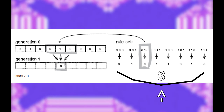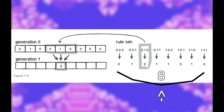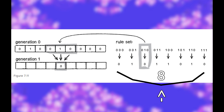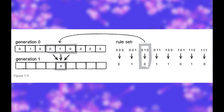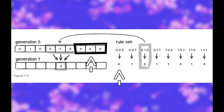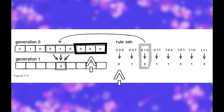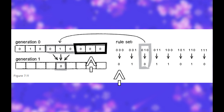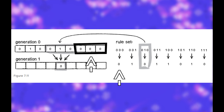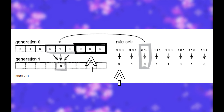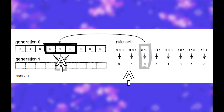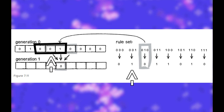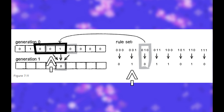There are eight possible configurations for a cell with its neighbors. For example, if it's dead and has no alive cells near it, then there are three zeros. If it's dead and there's one alive cell by its right side, then it has a one on the right side, and so on and so forth.